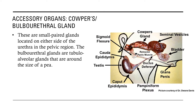Next is the Cowper's gland, also called the bulbourethral gland. These are small paired glands located on either side of the urethra in the pelvic region. The bulbourethral glands are tubular glands that are around the size of a pea and are found in all domestic animals. However, in the boar, the Cowper's or bulbourethral glands are extremely large compared to those of other animals.